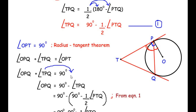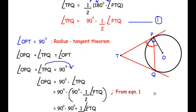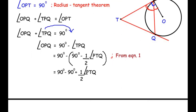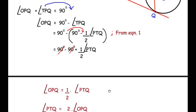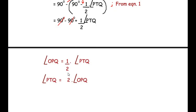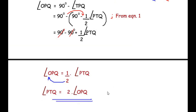So angle OPQ = 90° − (90° − ½ × angle PTQ). Expanding the bracket: 90° − 90° + ½ × angle PTQ. The 90° terms cancel, leaving angle OPQ = ½ × angle PTQ. Taking 2 to the other side, we get angle PTQ = 2 × angle OPQ, which is what we were asked to prove.